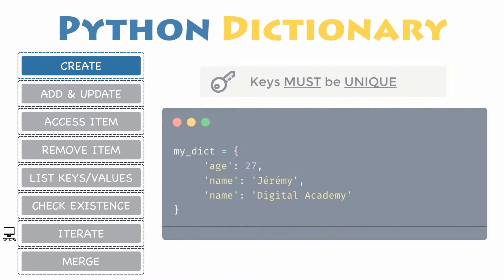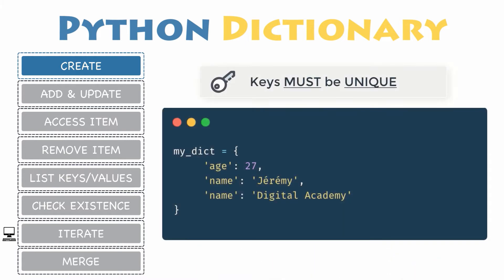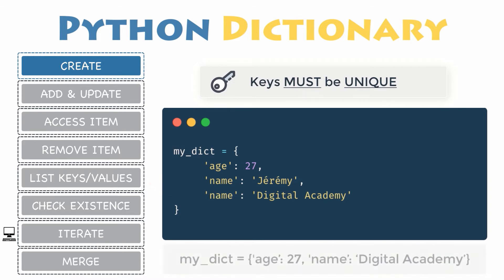Dictionaries are pretty straightforward, but here are a few points you should be aware of. Keys must be unique — a key can appear in a dictionary only once. Even if you specify a key more than once during the creation of a dictionary, the last value for that key becomes the associated value. Notice that the first occurrence of the key name 'Jeremy' has been replaced by the second one, 'Digital Academy'.